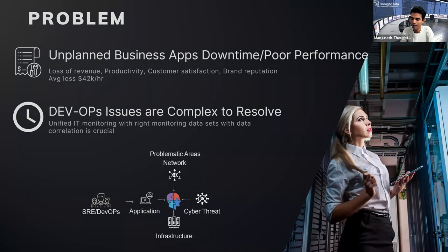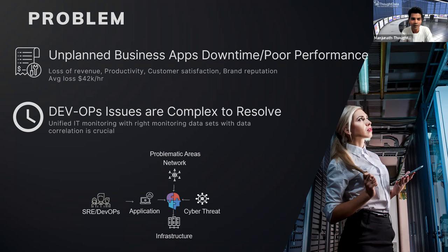The primary problem in a DevOps environment — whenever customers are using business-critical applications, you can end up with unplanned application downtime or, predominantly, poor performance. Customers experience poor latency on applications. Business-critical applications are very critical for revenue and brand reputation. Even a single minute of unplanned downtime can have a significant impact on the business, customer productivity, and employee productivity. IT issues are extremely complex to resolve when a ticket comes to you to investigate what's going on.